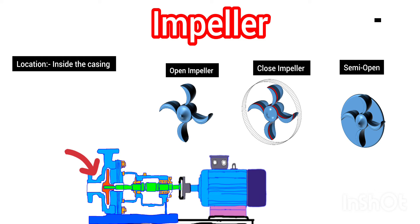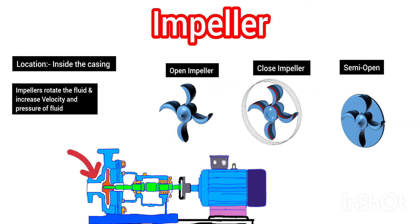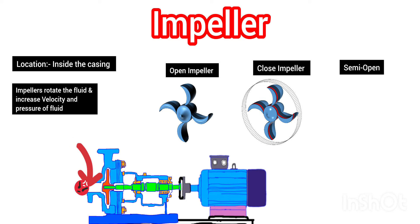The main role of the impeller is that it rotates inside the casing. When the fluid we are going to pump enters the pump casing, the rotating impeller rotates that fluid. This increases the velocity and pressure of the fluid by creating centrifugal force. So the main function of the impeller is to increase the velocity and pressure of the fluid which comes inside the casing.